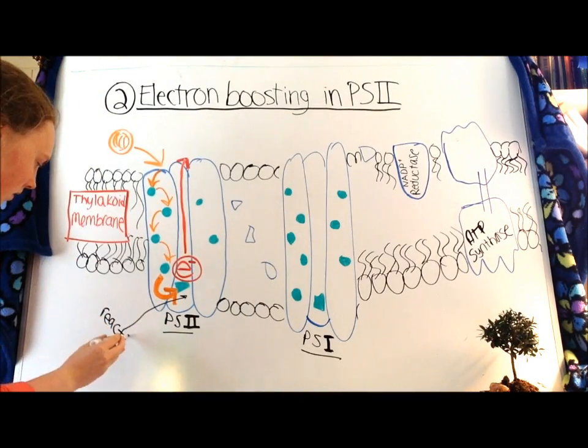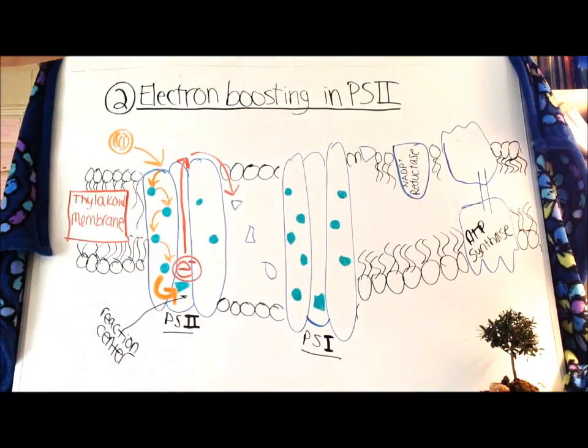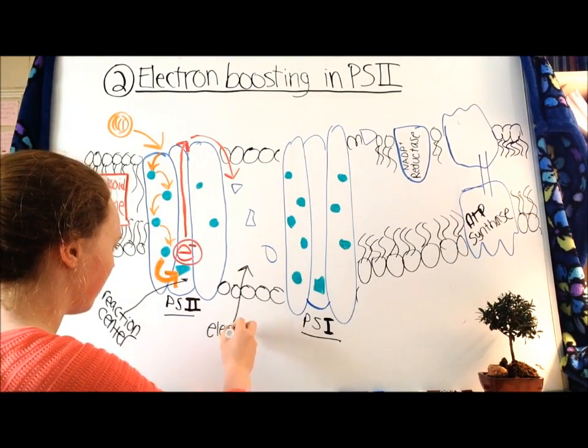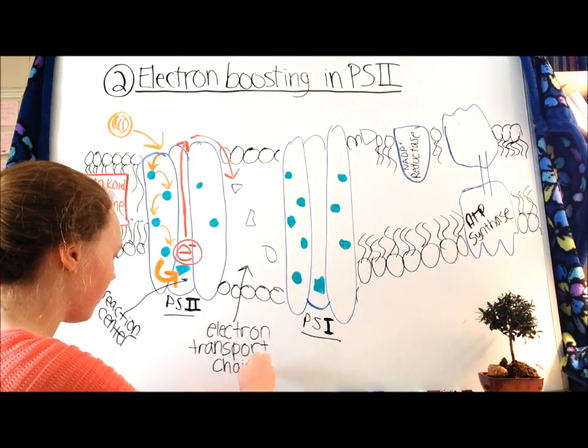So back to the photosynthesis. The photon excites the electron in the reaction center of Photosystem II. This boosts the electron up and out and onto the electron transport chain.